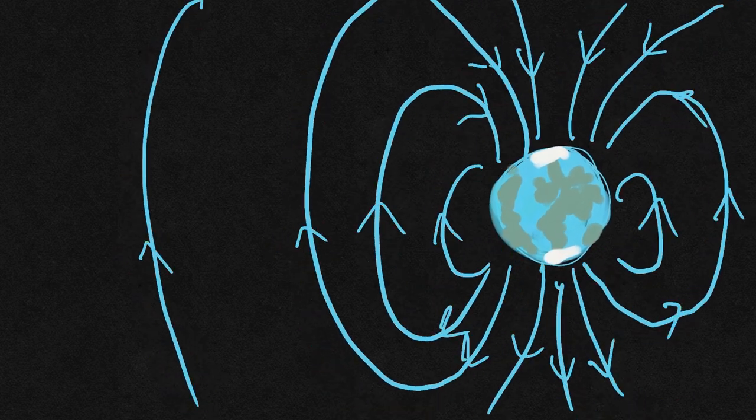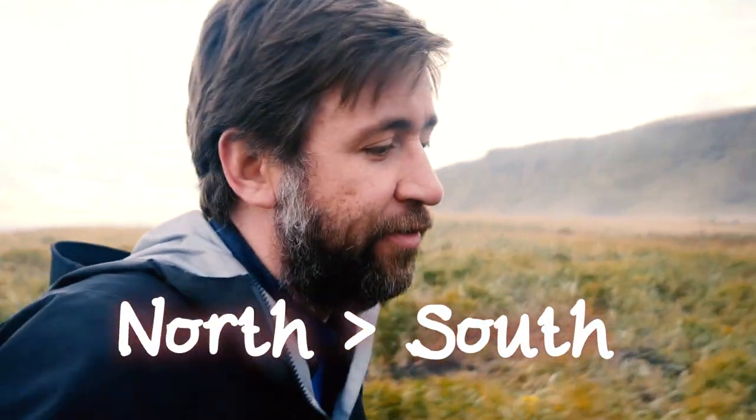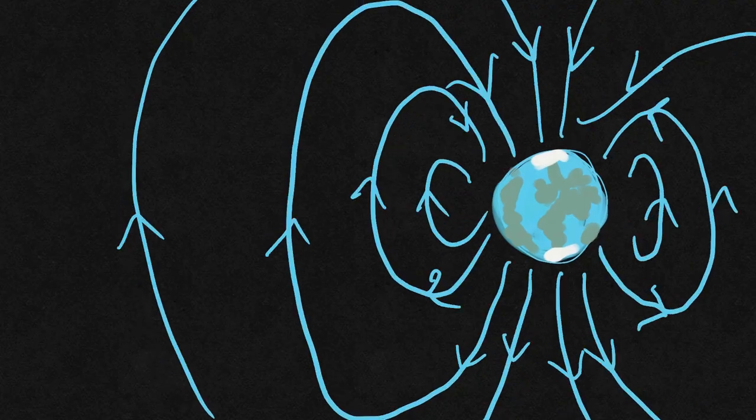But here's my explanation anyway. So here's the Earth, and the Earth has a magnetic field around it as you know, and magnetic field lines point from north to south. The north pole of the Earth is actually the south pole of a bar magnet, so if you imagine it like a giant bar magnet, the north end of Earth would actually be the south pole of that.